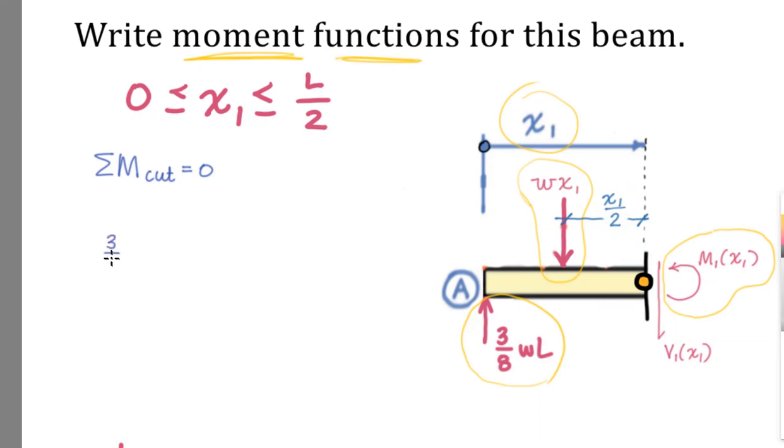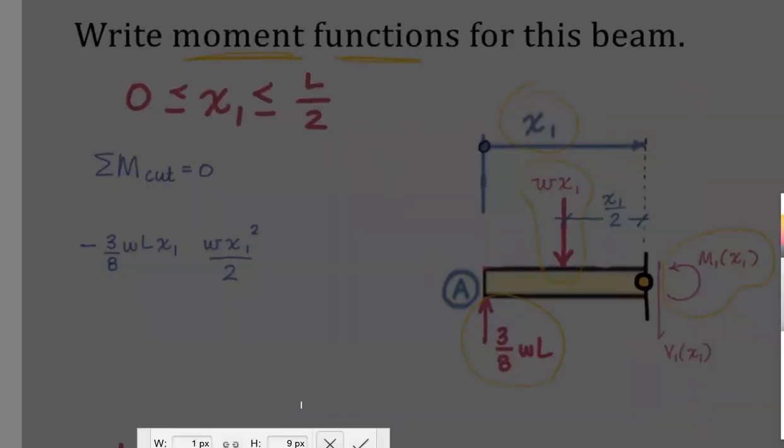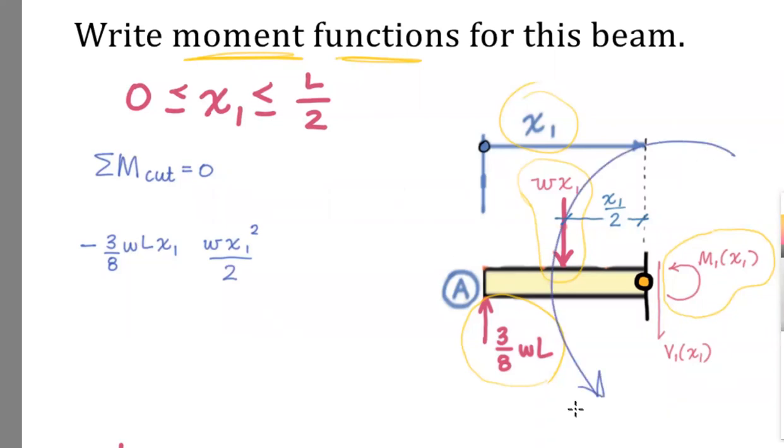First term, 3/8 w times l, distance x sub 1, sign tends to rotate the body clockwise or negative, rotating the body about the axis that we're summing the moments. Next term, we have w x1, and the distance is x1 over 2. So w x1 times x1 over 2 equals w x1 squared over 2. And how about a sign for that one? That tends to rotate the body counterclockwise, so positive.